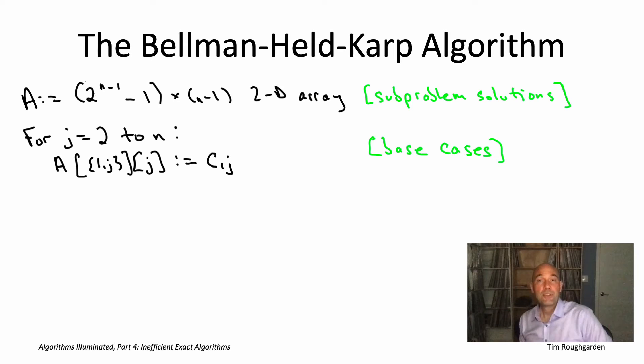So now we solve all the subproblems systematically, working from smaller subproblems to larger subproblems, and again the natural notion of problem size here is the number of vertices of the path is supposed to visit, so the cardinality of the set capital S. So we start from size three subsets, and then we work up to size four, etc., culminating with when capital S is equal to all n vertices.